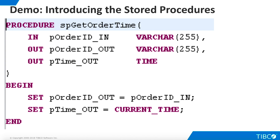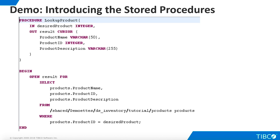We are ready to begin our demo. First, let's take a look at the three stored procedures we'll be using. The first is called GetOrderTime. It accepts one input parameter, an order ID. Order ID is simply echoed back as a scalar output. In addition, a time value is returned as a second scalar. Next, we'll be using the LookupProduct procedure from the examples folder that is shipped with TDV. It accepts a product ID as an input parameter and returns a cursor output. However, since the procedure looks for an equal condition on a unique key, it will never return more than one row.